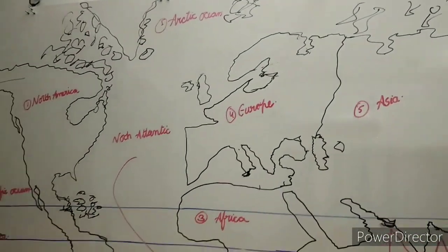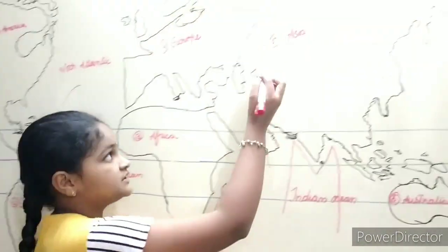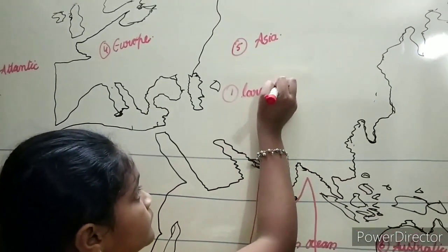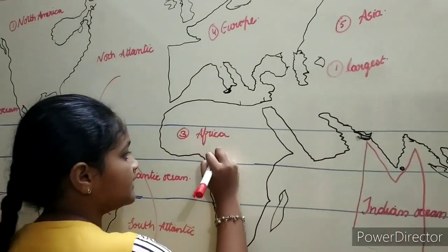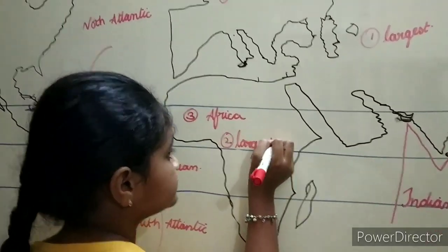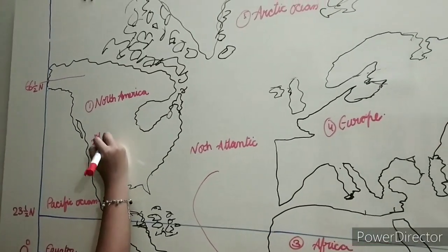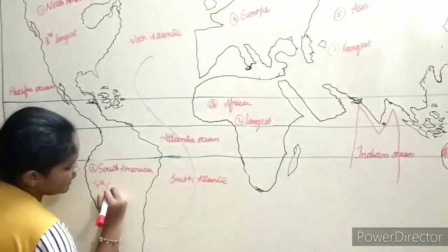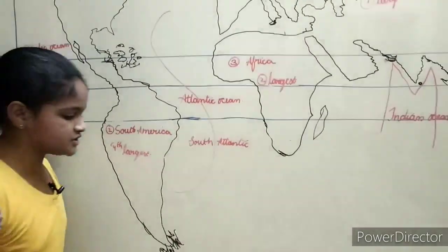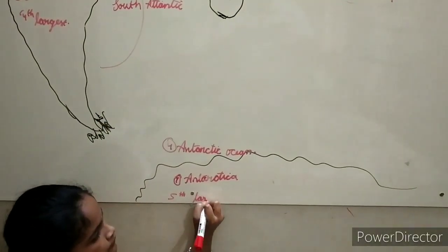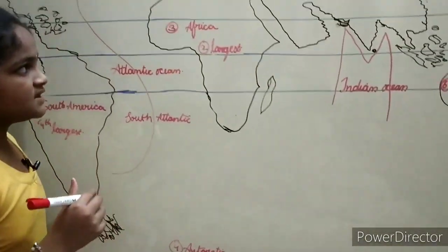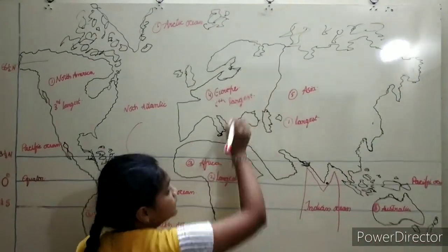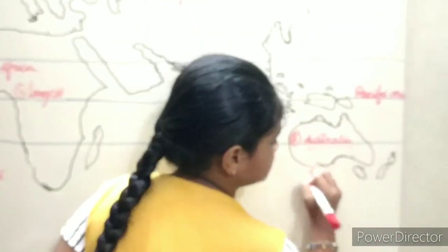Now we will see the continents in area-wise order. First largest: Asia. Second largest: Africa. Third largest: North America. Fourth largest: South America. Fifth largest: Antarctica. Sixth largest: Europe. And Australia is the smallest continent.